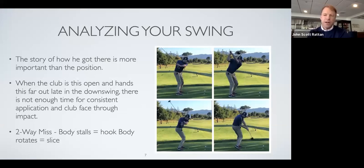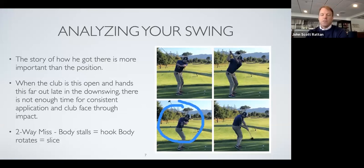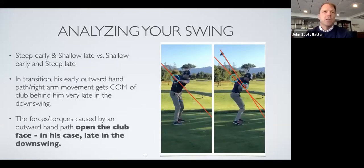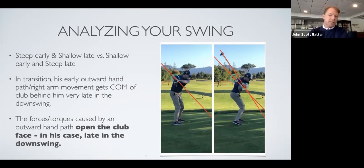When the club is open and the hands are that far out, we're in trouble. In the transition, his right arm goes out towards the golf ball excessively. You can see the shaft is above his right forearm, hands going out toward the ball, resulting in an overly open club face very late in the downswing. If I could choose a preference, I'd have a hand path that goes from a neutral backswing to a neutral or slightly behind downswing — like Rory McIlroy who gets deep. I need to figure out why Jason's hands are going out.